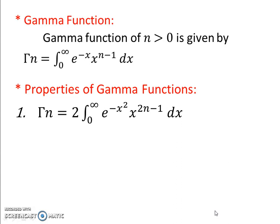The second property is Γ(1) = 1. If you put n = 1 in the definition of Γ(n), you get ∫₀^∞ e^(−x) · x⁰ dx. Evaluating, this is [e^(−x)/(−1)] from 0 to ∞, which gives 0 − (−1) = 1. Hence Γ(1) = 1.